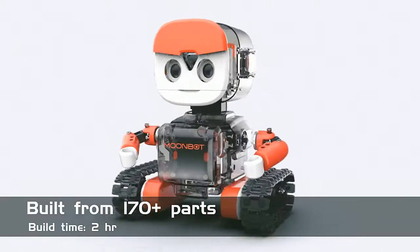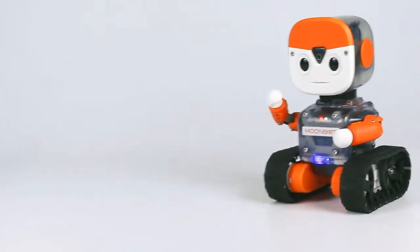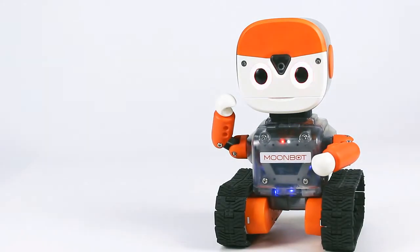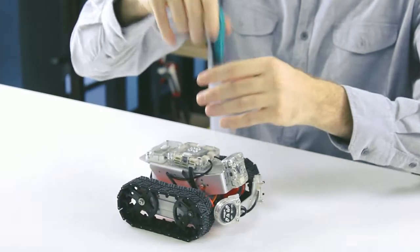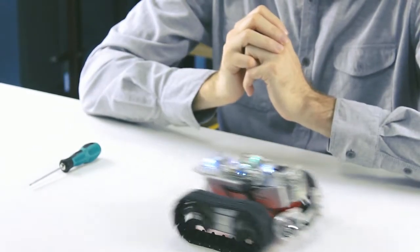Now the translucent shell allows you to see the electrical and mechanical parts inside of each robot as well as its status through a set of LEDs. Unlike other robot kits, Moonbot uses cutting-edge computer vision as its primary sensor.